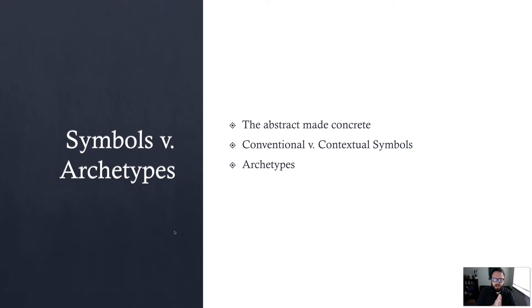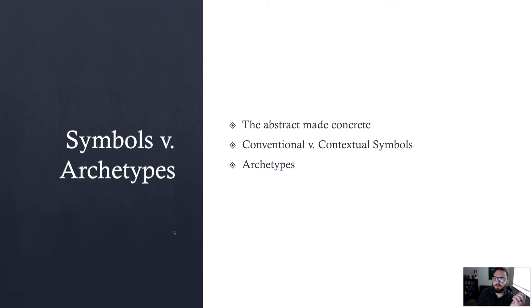Symbols and archetypes. The best way to think about what a symbol is: it's a concrete representation of an abstract idea. For example, 'my love is like a red, red rose.' Love is kind of an abstract concept — it's very difficult to define exactly what it is. But we point to this symbol, this red rose: it's beautiful and smells nice, but if you grab it too hard, it'll hurt you. It's a way to take an idea and attach a significance to it.